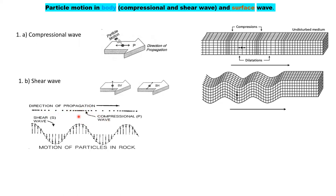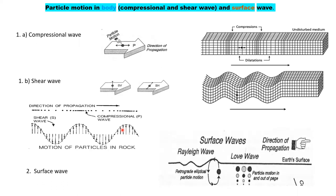For shear waves, the motion of particles in the rock is perpendicular to the direction of propagation. For surface waves, there is retrograde elliptical particle motion for the Rayleigh wave; for Love waves, the particle motion is in and out of the plane — comparable to shear horizontal motion. For Rayleigh waves, the direction of propagation is forward and the particle motion is in an elliptical pattern.